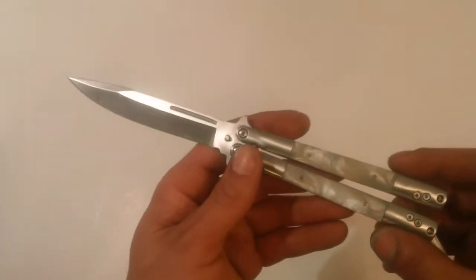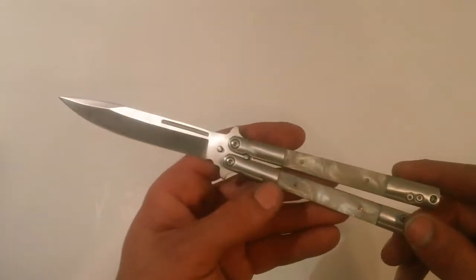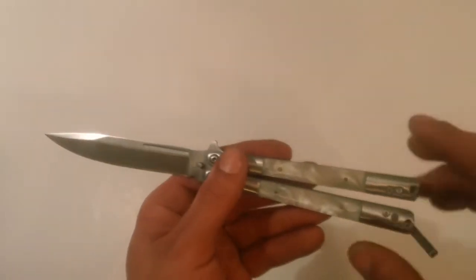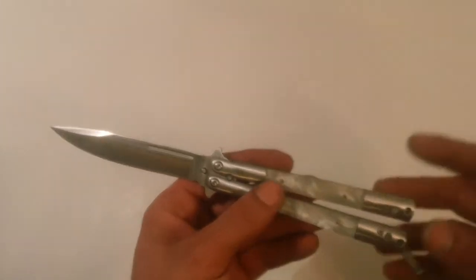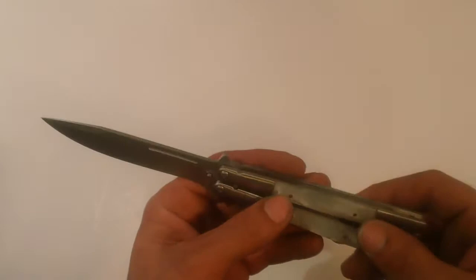The overall length of this guy is 9 inches, 4 inches on the blade there. Satin finish on the handles with a Perlox inlay. Right there. Give it kind of a classy or a classic Balisong look to it.